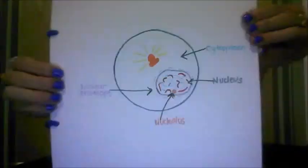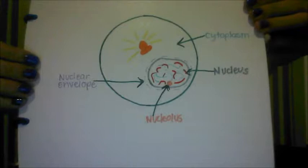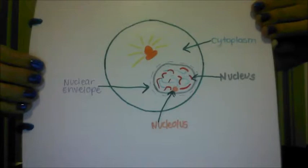The cell cycle starts with interphase, which prepares the cell to enter into mitosis, which has four different phases for cell division. Interphase is also called the resting state of the cell. It starts with the G1 phase, where the cell grows and matures, then goes to the S phase, where it copies the DNA. The last phase in interphase is the G2 phase, where the whole cell prepares for actual cell division.